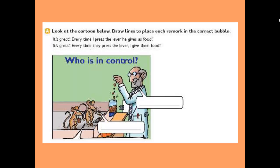Look at the cartoon below, draw lines to place each remark in the correct bubble. Here we have two sayings or remarks. The first one is: it's great, every time I press the lever he gives us food. And the second remark is: it's great, every time they press the lever I give them food.